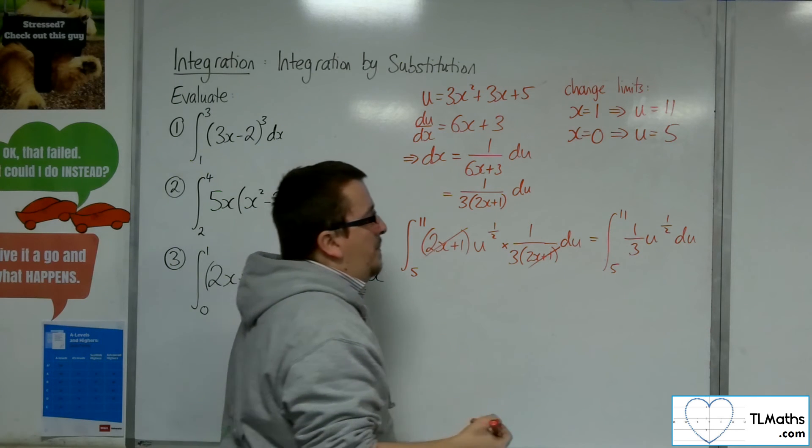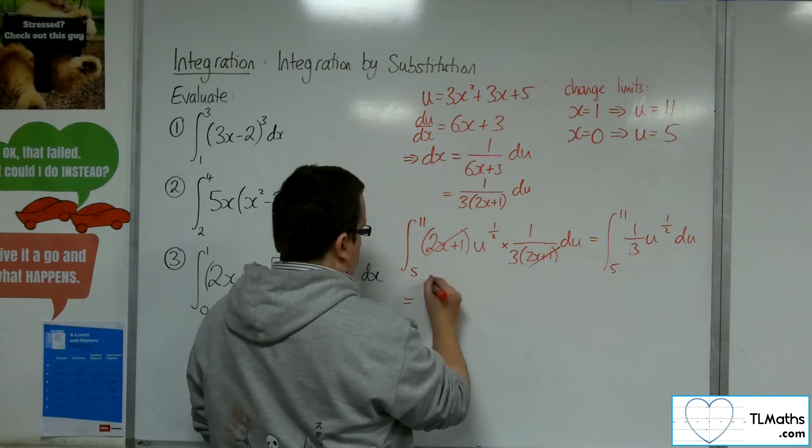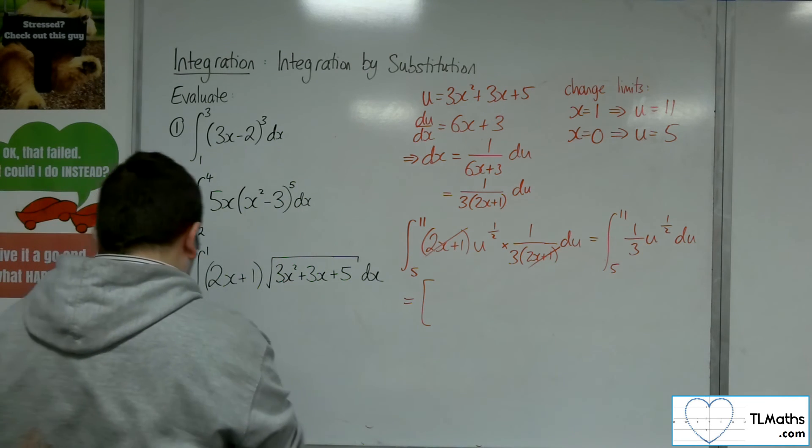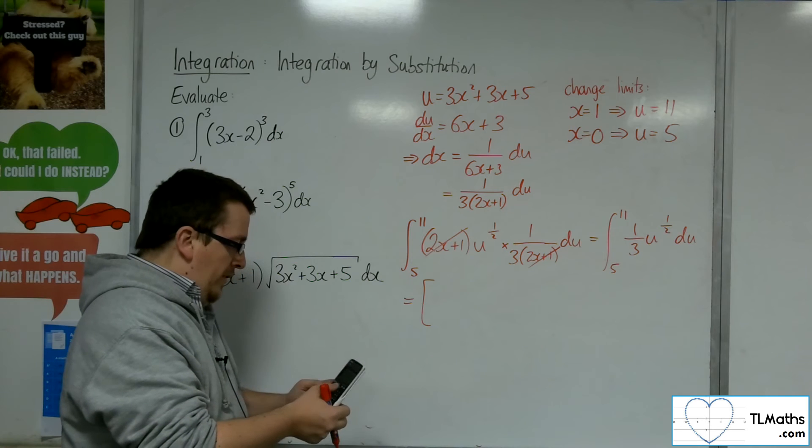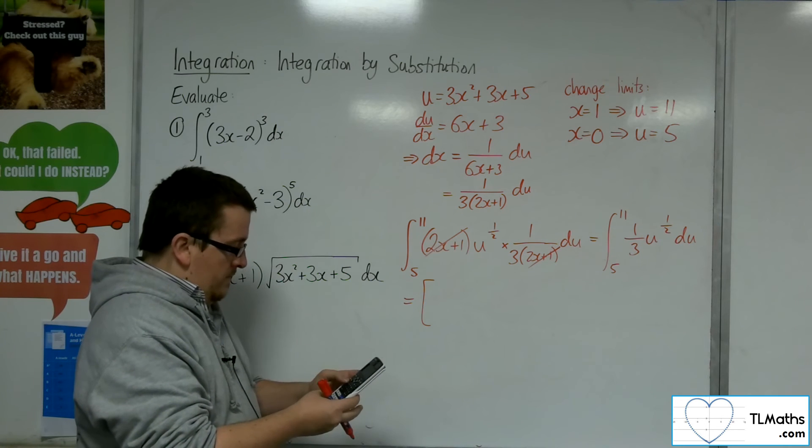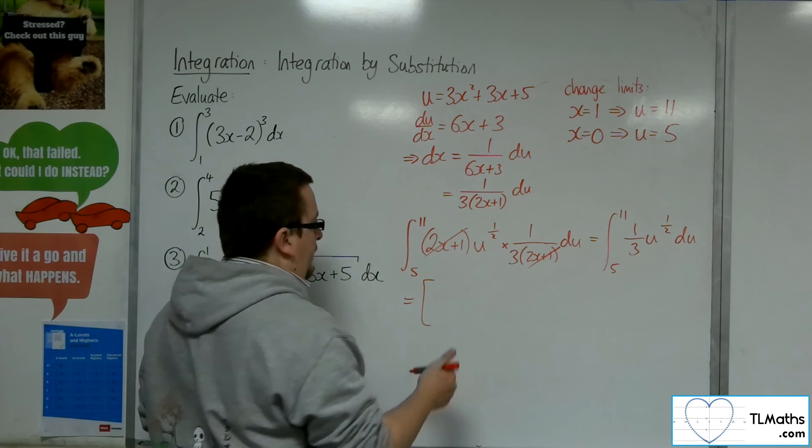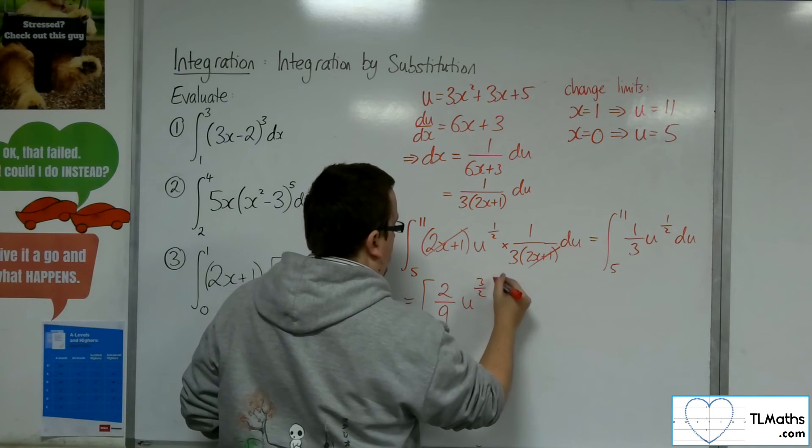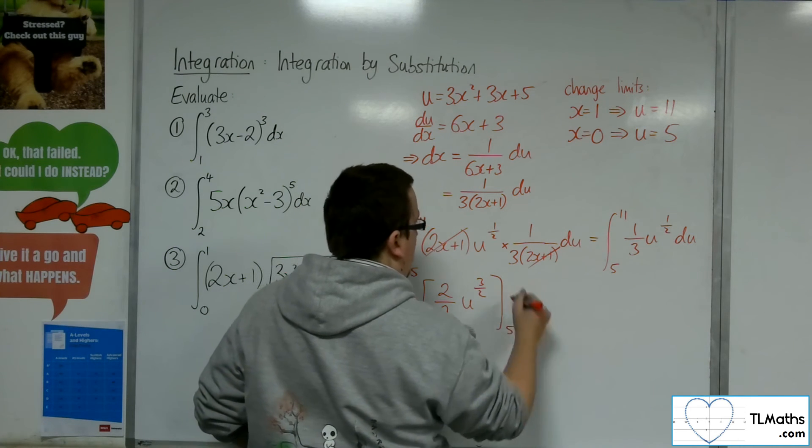Add 1 to the power, divide by the new power. So just to make sure I don't make any kind of calculation error here, 1 third divided by 3 halves, so 2 ninths, u to the 3 halves evaluated between 5 and 11.